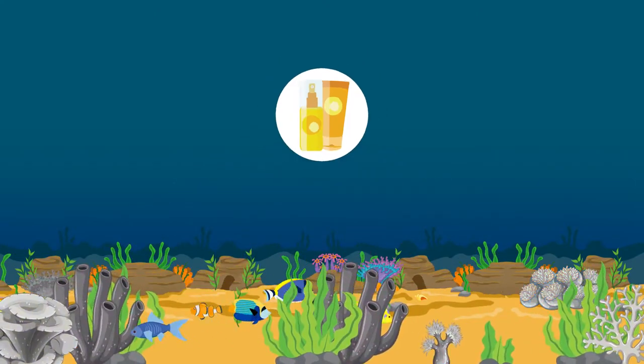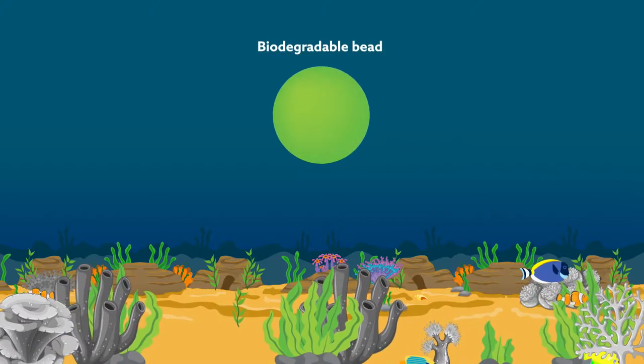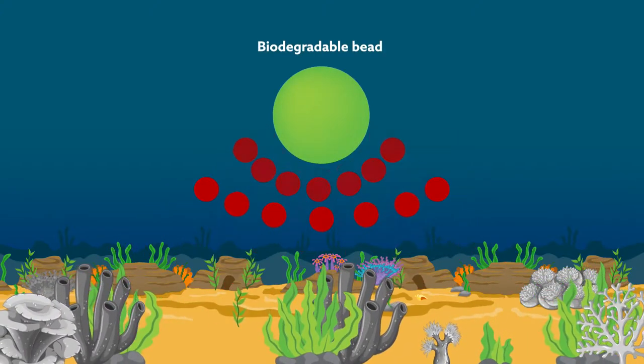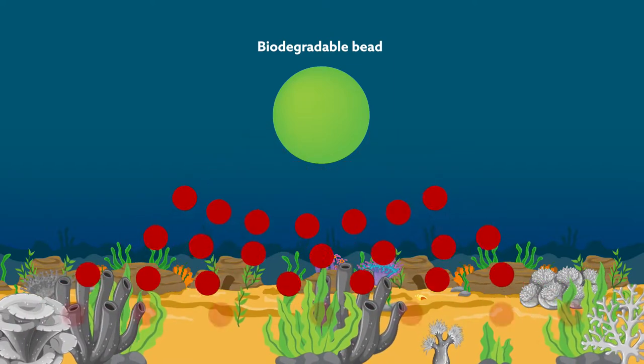Now, researchers have developed a biodegradable bead that can soak up the sunblock ingredient, oxybenzone, like a thirsty sea sponge. They hope to use the agent to clean up seawater at beaches.